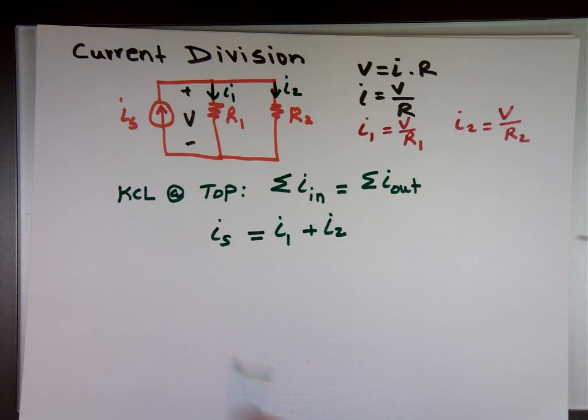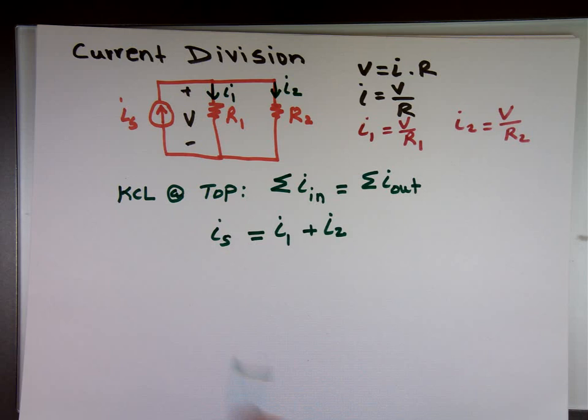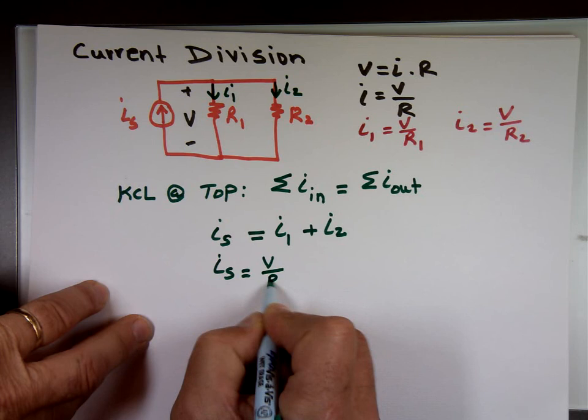Can I solve for I sub 1 now? What is I sub 1? I sub 1 is going to be V over R sub 1. And what is I sub 2? V over R sub 2. V over R sub 2. So if I come back to this equation now and replace I sub 1 with V over R sub 1, and replace I sub 2 with V over R sub 2, I should be okay.